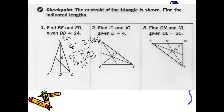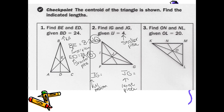Now I'm going to look at the next one — finding IG and JG. They gave me IJ equals 4. IJ looks like the small piece. IG looks like it's the full median, and JG looks like the large piece. This is wonderful — when they give you the small piece, all I need to do is multiply. The full median is 4 times 3, which gives me 12. The larger piece is 4 times 2, which gives me 8.